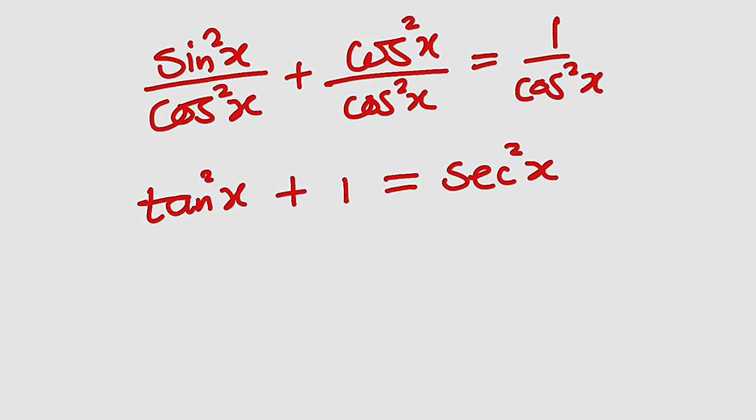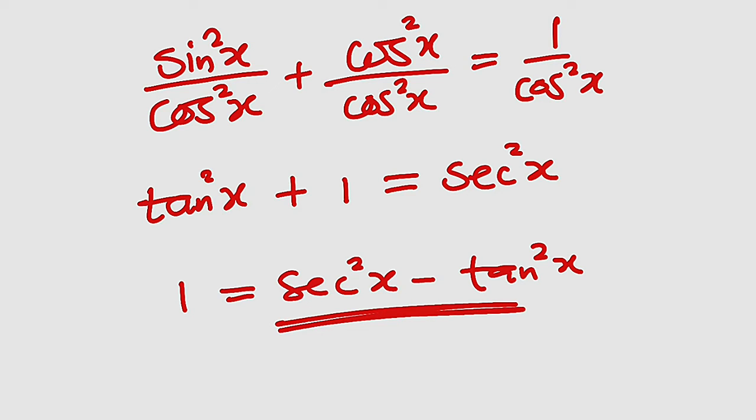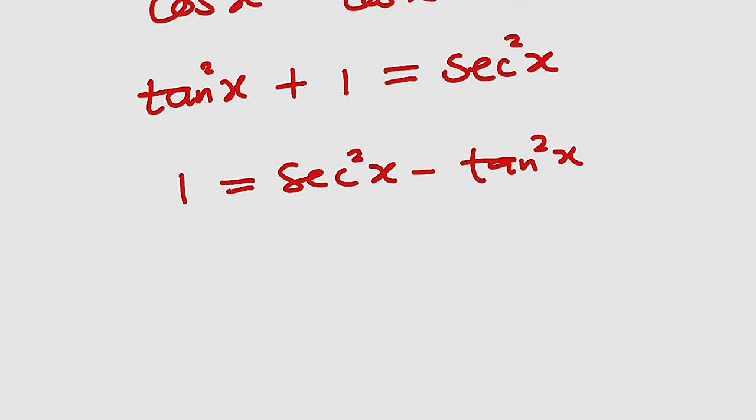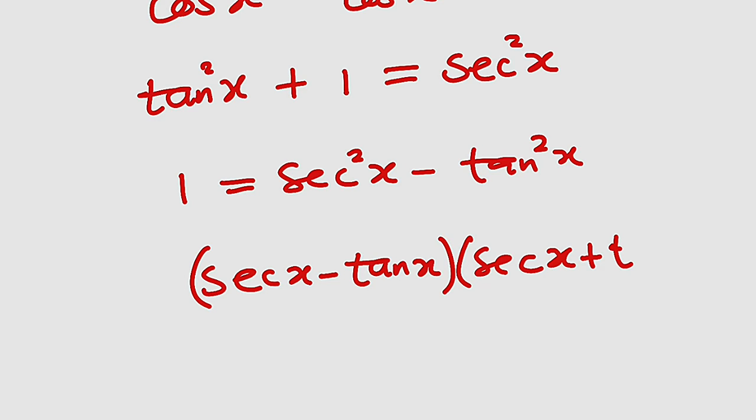If you take tangent to the other side, you have 1 equals secant squared x minus tangent squared x. This is difference of two squares, and secant squared x minus tangent squared x can be written as secant x minus tangent x multiplied by secant x plus tangent x.